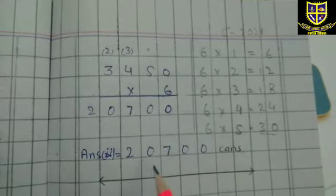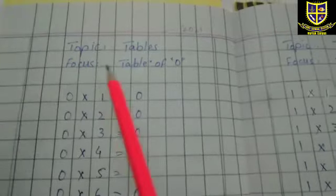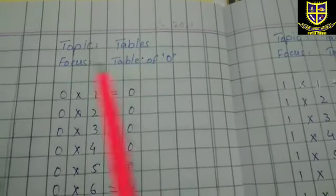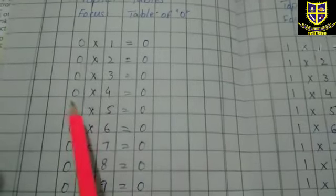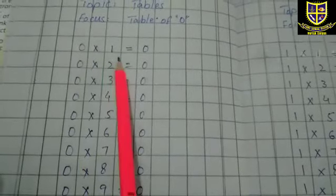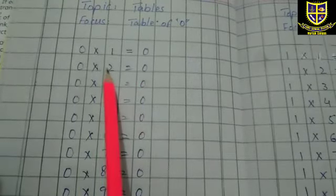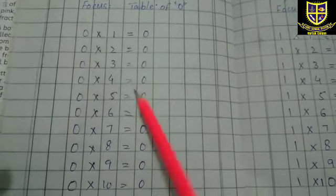اس طرح ہمارا second answer بنا: twenty thousand seven hundred cans transported in all — یعنی total 20,700 cans transport ہوئے۔ ہمارا unit number one ختم ہو گیا ہے۔ Next page پر topic tables — table of zero لکھیں گے: zero one's are zero، zero two's are zero۔ یاد رہے کہ zero کا number جس سے بھی multiply ہو، answer ہمیشہ zero آئے گا۔